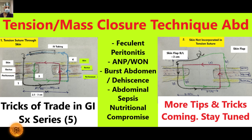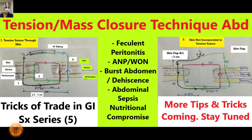Welcome back. In this 'Tricks of the Trade in GI Surgery' short video series, we are going to talk about tension or mass closure of the abdomen. This technique is relevant when dealing with patients with fecal peritonitis, acute necrotizing pancreatitis, bowel necrosis, abdominal dehiscence in the postoperative period, secondary delayed closure, gross abdominal sepsis, or nutritional compromise.